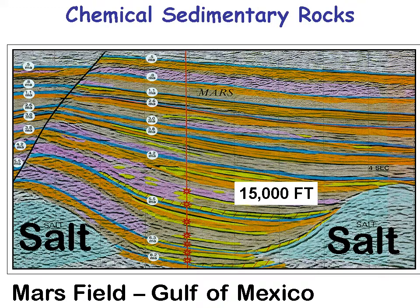Here's another picture from the Gulf of Mexico — the Mars field, a very successful field. There you see salt on both sides of an oil field. That salt keeps the oil or natural gas from coming out on both sides. The beds pinch out, and the purple is probably shale and clay, the blue is salt. A combination of shale, clay, and salt keeps the oil and gas trapped so you can drill it.